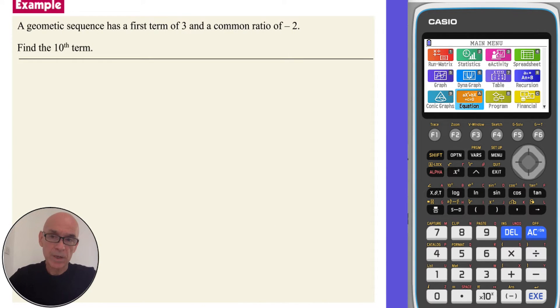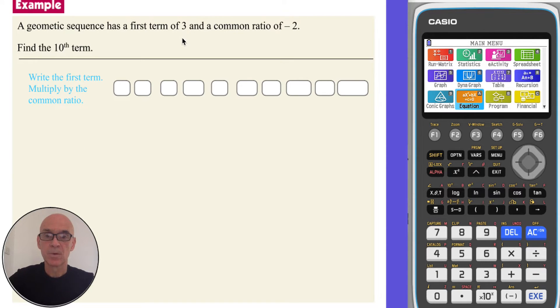In this question we're given a geometric sequence and we're asked to find the tenth term. We could start by drawing a diagram showing the first term which is 3 and multiplying that by the common ratio which is negative 2 to give a second term u2 of negative 6. If we multiply that term by negative 2 we will get a third term u3 of 12, a fourth term of negative 24, and if we keep this process going we will get a tenth term u10 of negative 1,536.